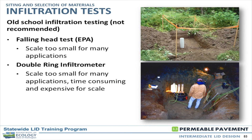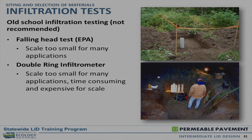Another old-fashioned test that was an option for a long time is the double ring infiltrometer. You still hear about it once in a while, but it's pretty much gone by the wayside. If you notice on the slide, there are graduated cylinders — we're measuring water in cubic centimeters and milliliters. The volume you might want to put in for a real facility is going to be a lot different than what's used in a double ring infiltrometer. These two tests — the falling head and the double ring infiltrometer — are to me very small scale, almost laboratory scale, still in use today but not recommended.